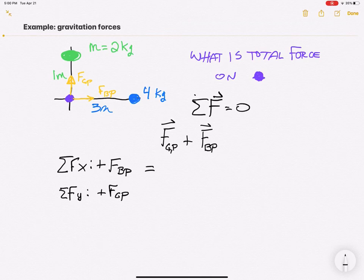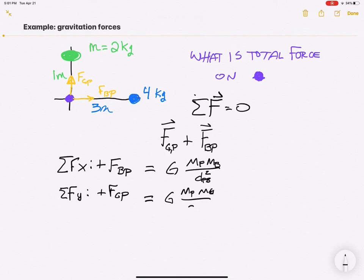These get expressed then as G times mass of purple times mass of blue over the distance between purple and blue squared. And that's going to equal G times mass of purple times mass of green over the distance between purple and green squared.